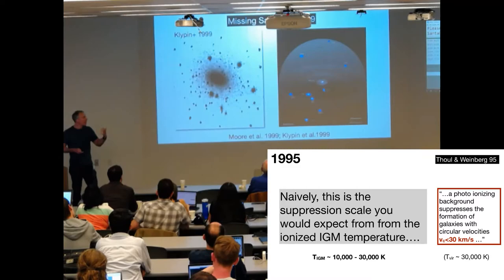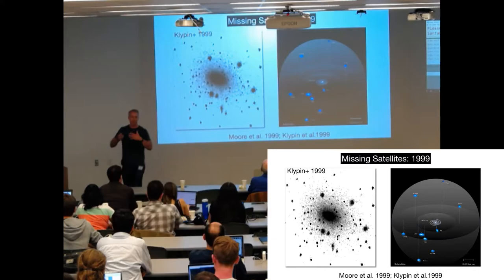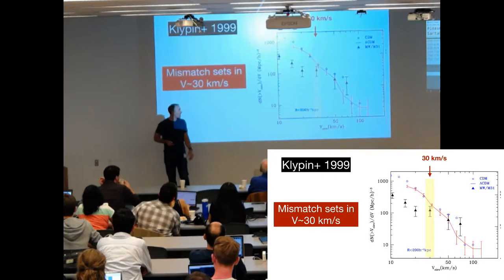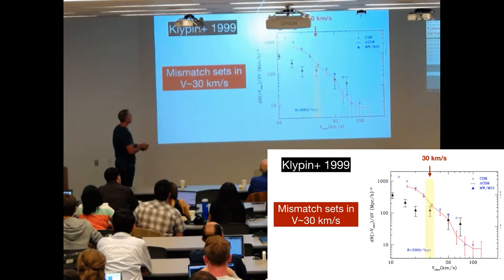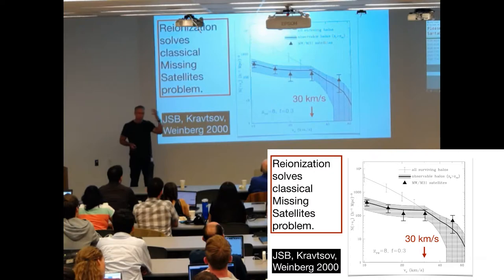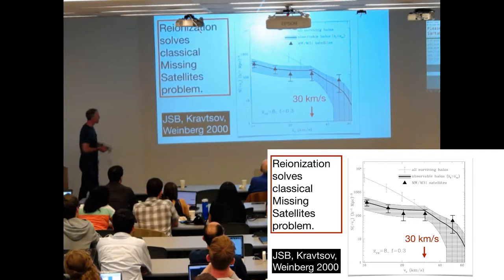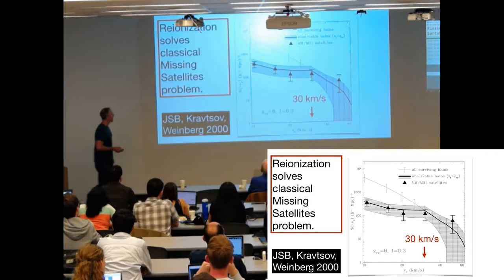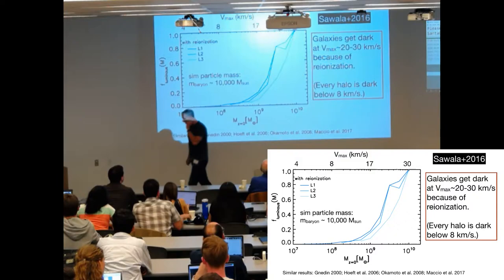Four years later, that's when the missing satellites problem came into being, because simulations had gotten high enough resolution where people could begin to resolve the substructure. And in fact, if you look at the plot from Klippen et al., you'll see that the data started diverging from the subhalo velocity function right around 30 kilometers per second. So, it did not take a genius to figure out that all you had to do was evoke Thule and Weinberg, and you can solve the problem. So this was nice. This was a nice, easy paper to write, especially when David Weinberg is your advisor. So flash forward.